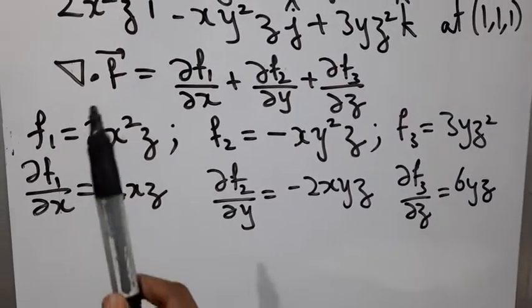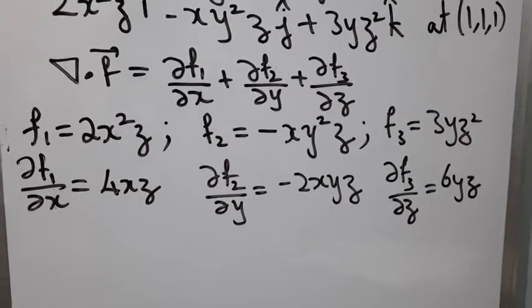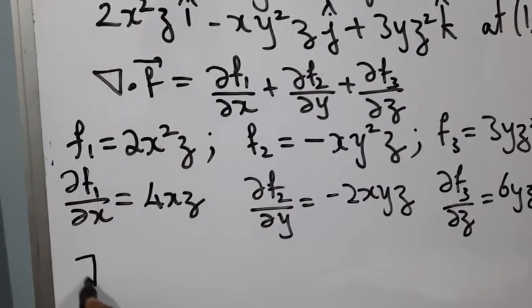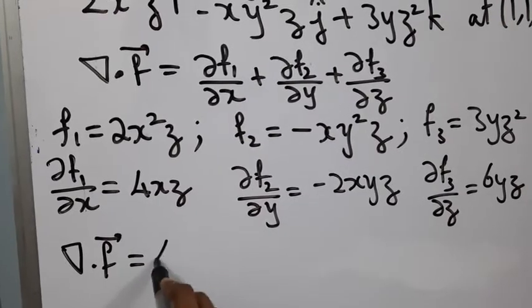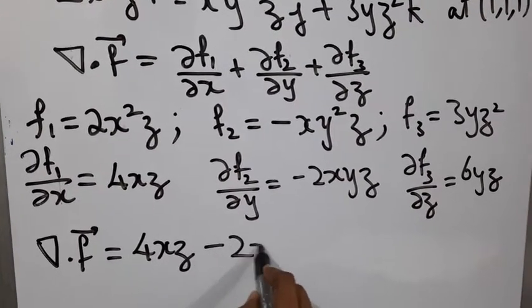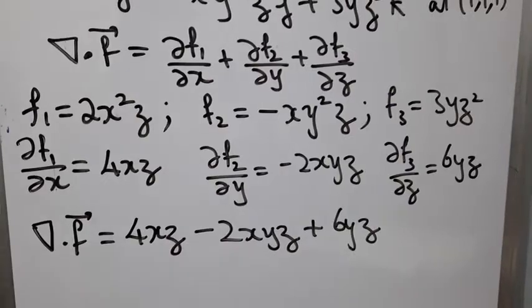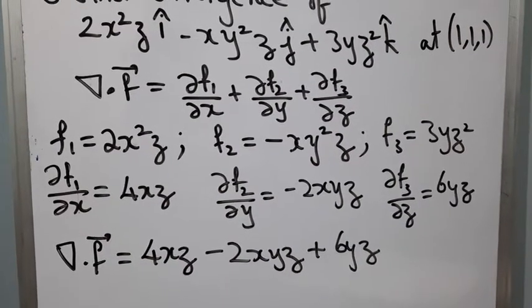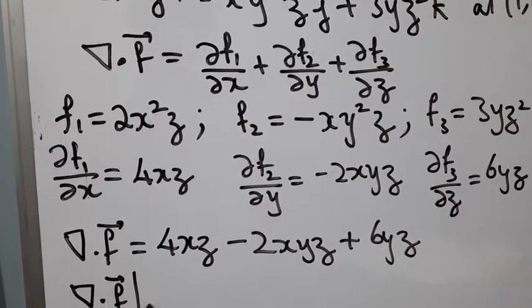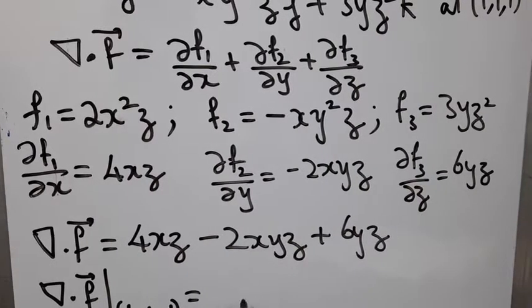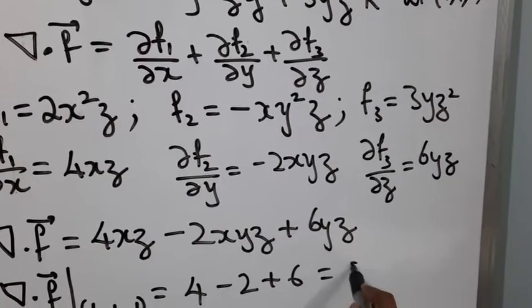Each component is partially differentiated with respect to the corresponding variable and then the sum is taken. So divergence at any point x, y, z is given by the sum of these partial derivatives. We need divergence at (1,1,1), so divergence of vector f at (1,1,1) will be 4 minus 2 plus 6, that is 8.